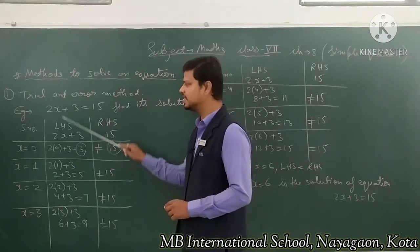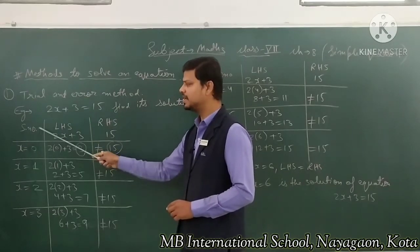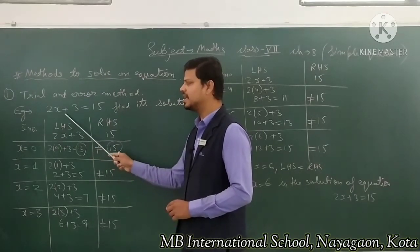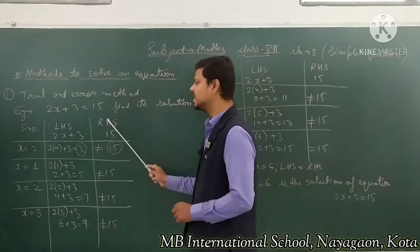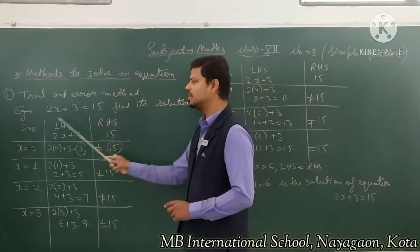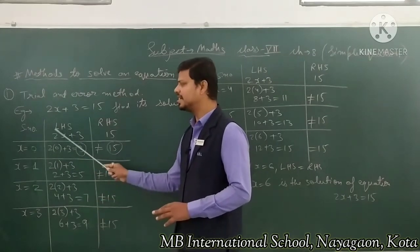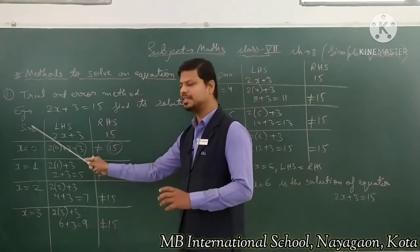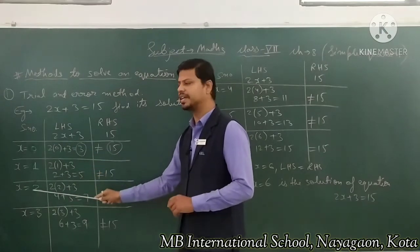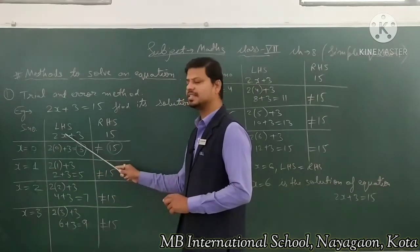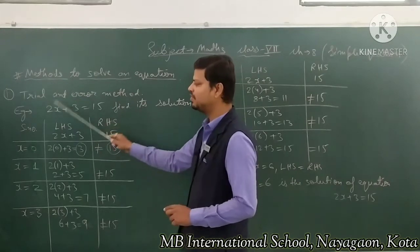We need to make a table. In this table, first column is the serial number, then a column for the value of x, then LHS which is the left hand side of the equation — 2x + 3 — and then the right hand side of the equation which is 15.